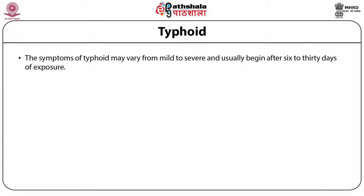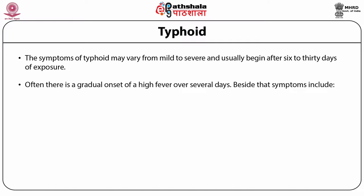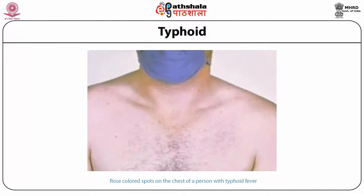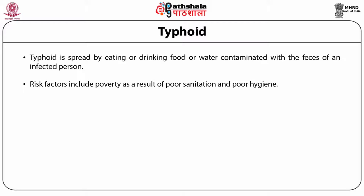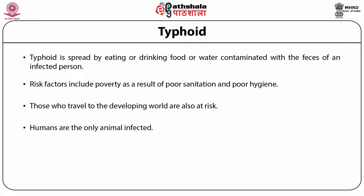The symptoms of typhoid may vary from mild to severe and usually begin after 6 to 30 days of exposure. Often there is a gradual onset of high fever over several days. Other symptoms include weakness, abdominal pain, constipation and headaches. A rose-colored rash may appear on the chest of a person with typhoid fever. Without treatment, symptoms may last weeks or months. Typhoid is spread by eating or drinking food or water contaminated with the feces of an infected person. Risk factors include poverty, poor sanitation and poor hygiene. Those who travel to the developing world are also at risk, and humans are the only animal infected.